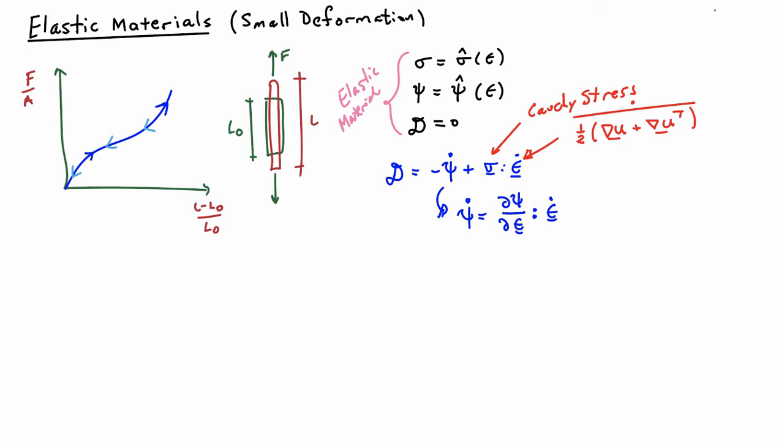Let me write it down. If I take the derivative of the free energy with respect to the first component, let's say epsilon 1-1, then by chain rule, I have to multiply that by epsilon 1-1 dot. And then it also depends on epsilon 1-2, so I have to take its derivative with respect to epsilon 1-2, and then multiply by epsilon 1-2 dot, again by chain rule. And I keep going all the way out to epsilon 3-3. So there are nine terms there, and that's why I've written it here with the double contraction notation. It makes it a lot more compact.